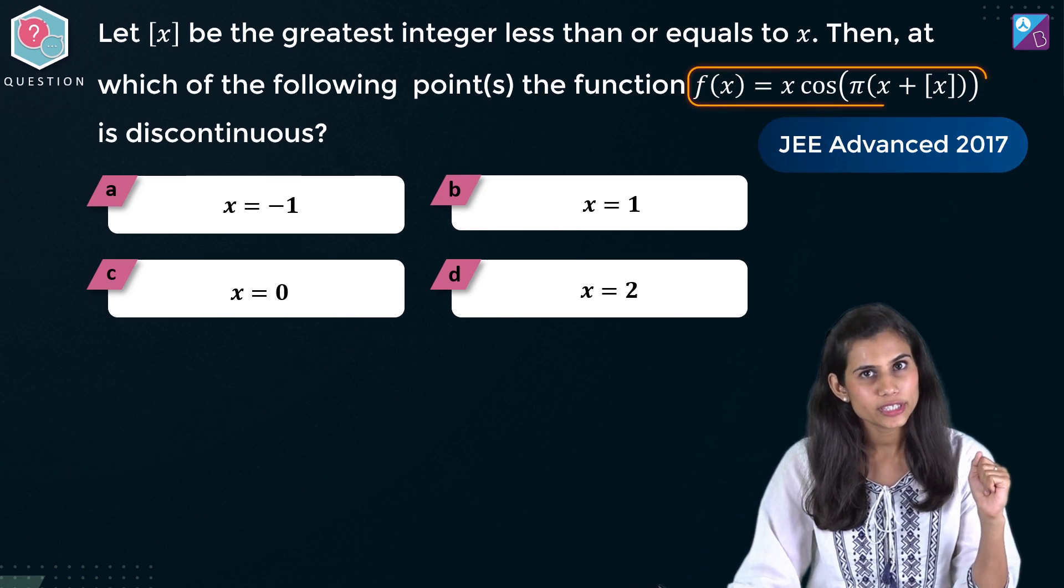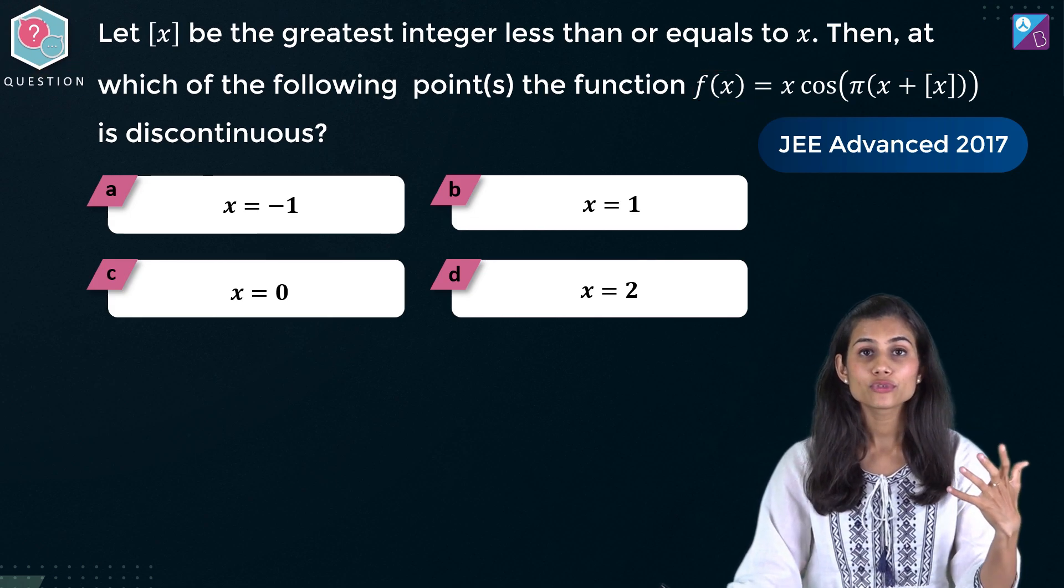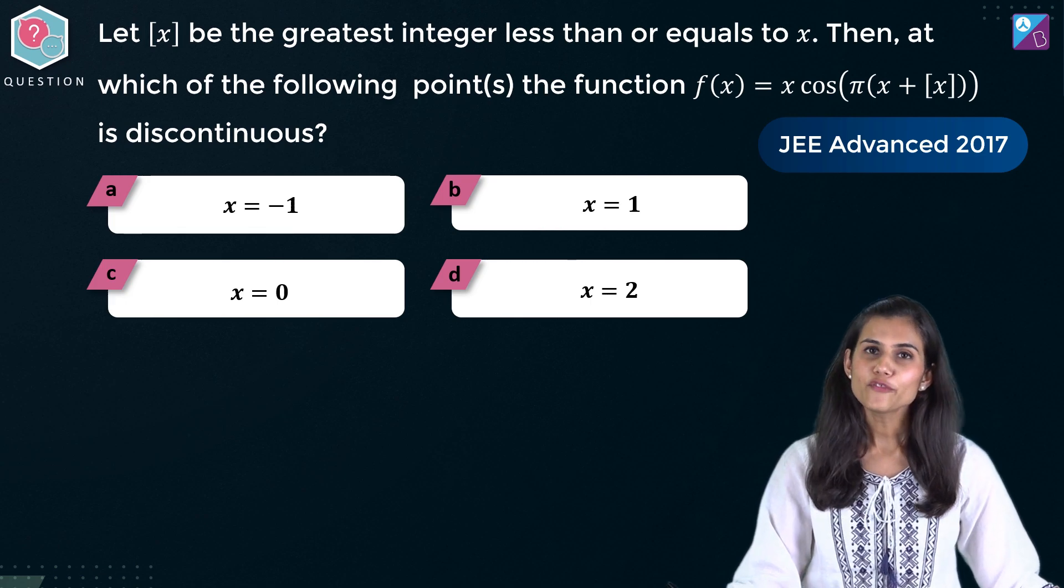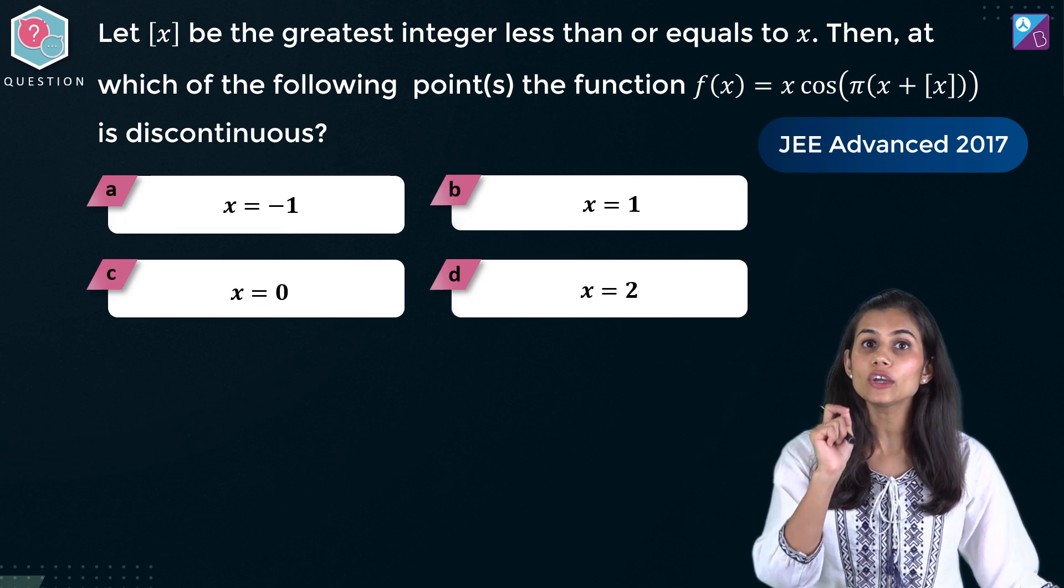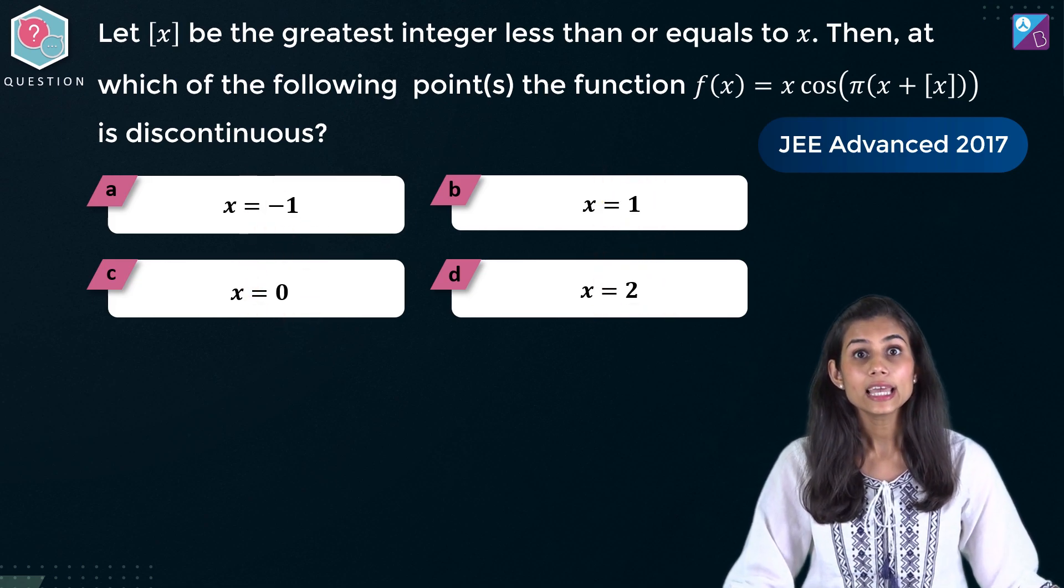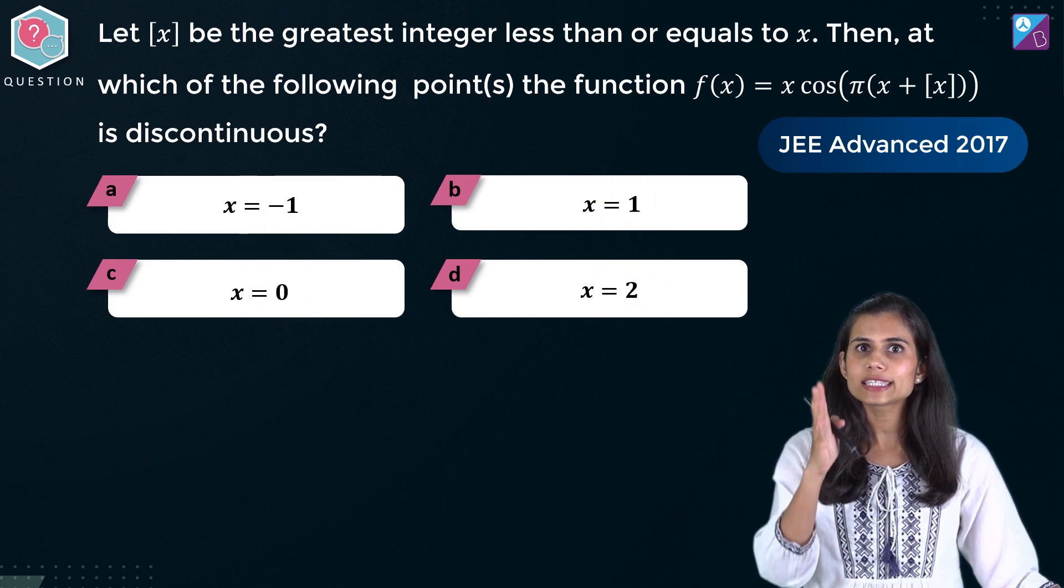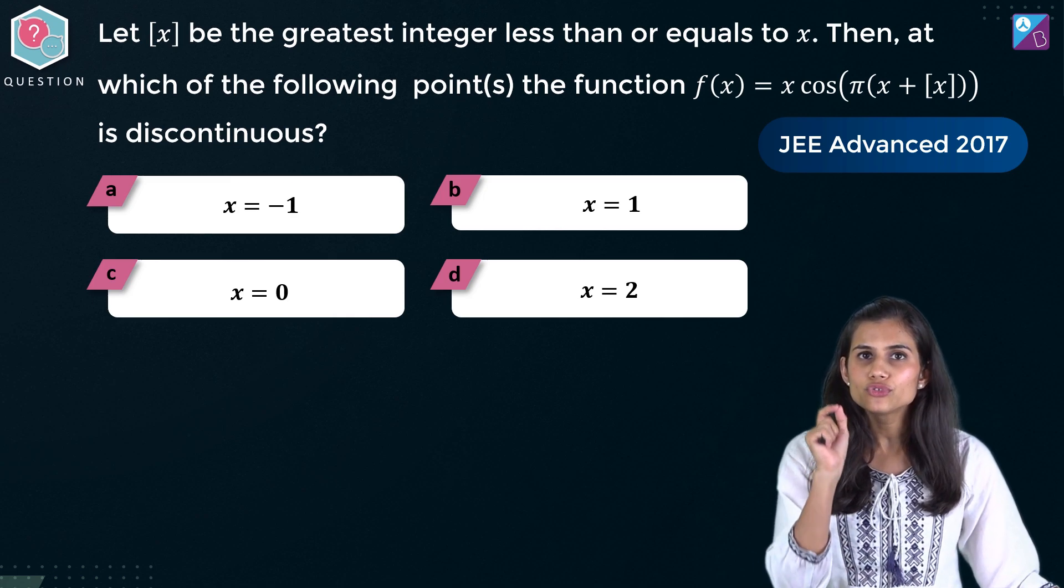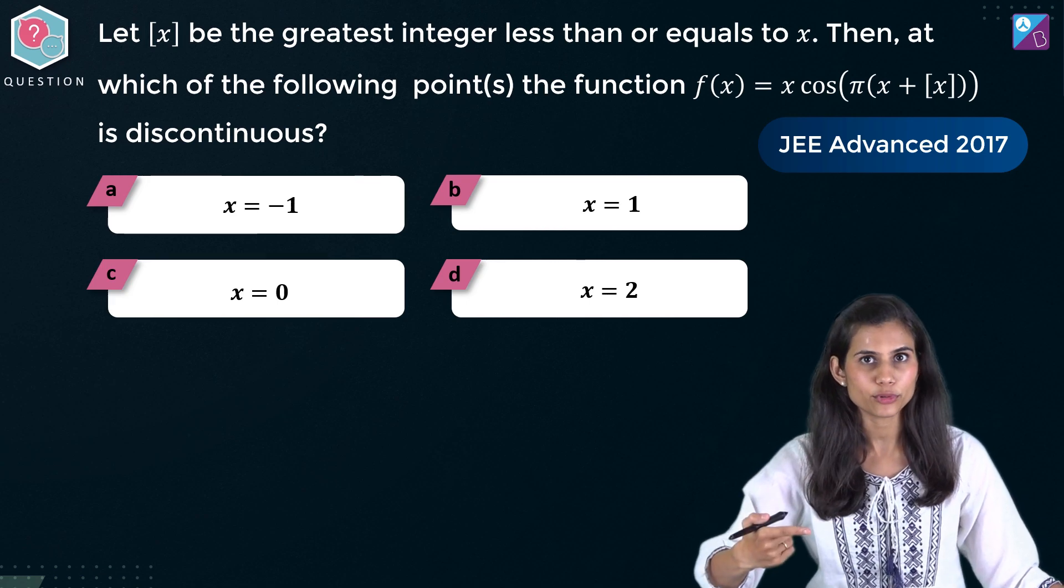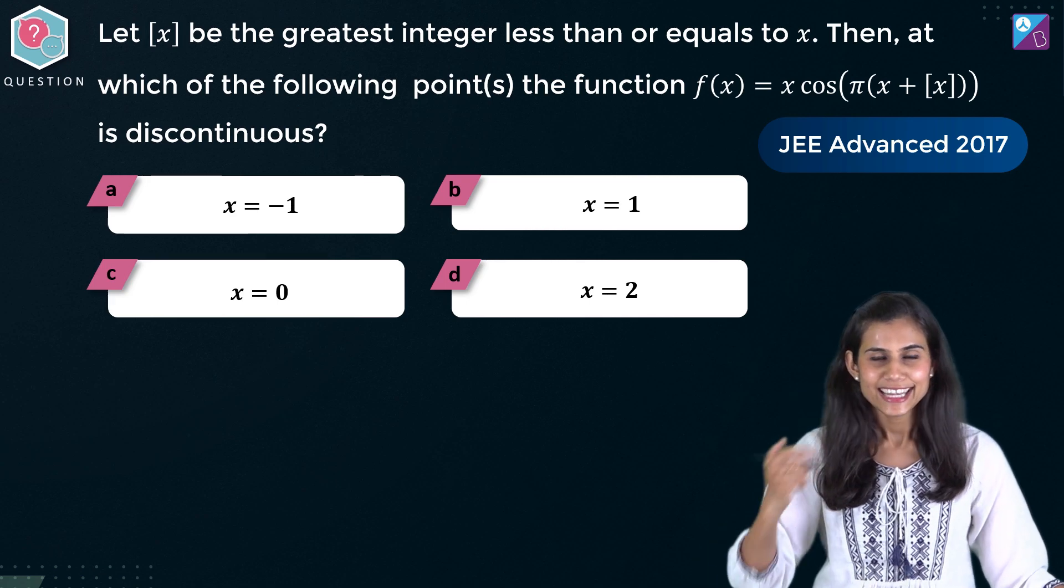Here we have a function f and the question is to check where all is this function discontinuous. Now for starters I want you to closely observe the options. Each one of them is an integer. That means our search is now narrowed down to just checking the behaviour of the function at integral inputs. Alright let's get started.